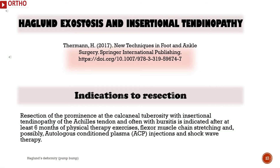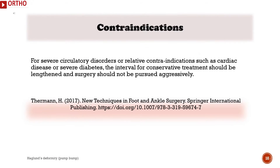Haglund exostosis and insertional tendinopathy — Indications for resection: Resection of the prominence of the calcaneal tuberosity with insertional tendinopathy of the Achilles tendon and often with bursitis is indicated after at least 6 months of physical therapy exercises, flexor muscle chain stretching, and possibly autologous conditioned plasma (ACP) injections and shockwave therapy.